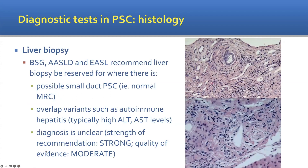Liver biopsy is another diagnostic test used in chronic liver disease, and all societal guidelines including the recent BSG recommend it be used only in select cases — typically where the cholangiogram is normal but small duct sclerosing cholangitis is still suspected. It may also be useful where there is an overlap with other liver diseases such as autoimmune hepatitis, which gives elevated transaminase levels (ALT and AST), or where no clear-cut diagnosis has been reached after full workup.